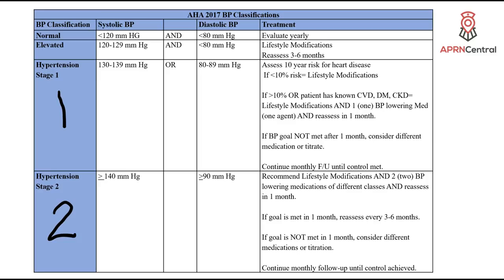Normal blood pressure is now defined as less than 120 systolic with a diastolic less than 80. For these patients you want to evaluate blood pressure yearly. Elevated blood pressure is a systolic of 120 to 129 mmHg with a diastolic less than 80. For these patients, encourage lifestyle modifications and reassess every three to six months.